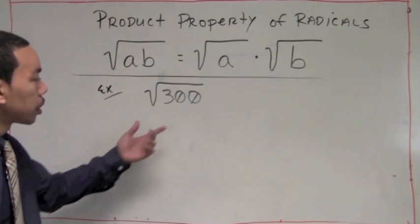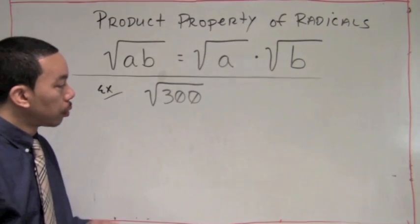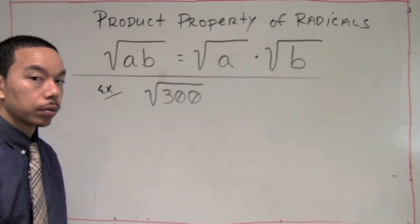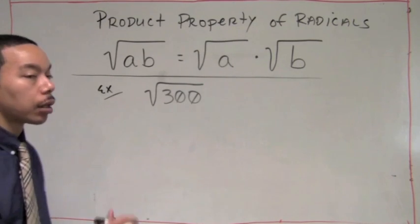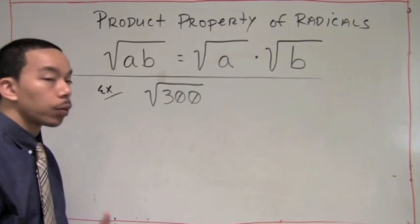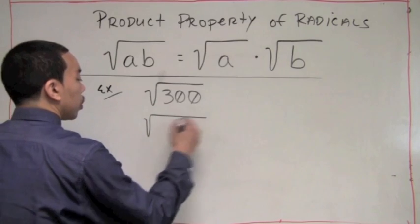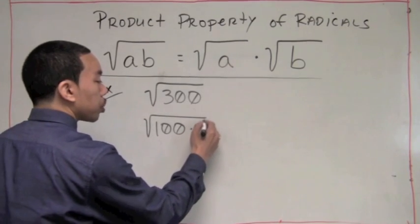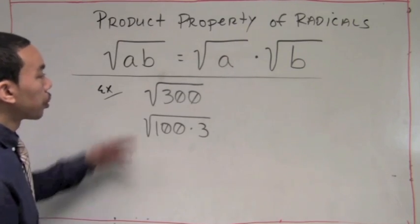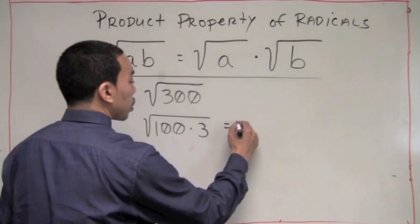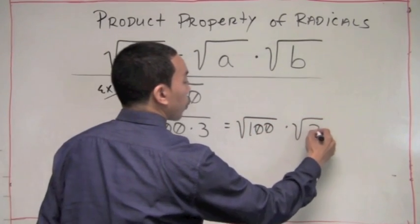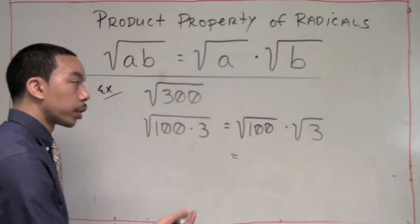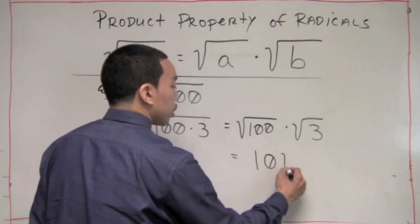Let's try another example: the square root of 300. That's definitely not a perfect square, so we ask what is the largest perfect square that can go into 300. From our list, the largest perfect square that goes evenly into 300 is 100, and it goes into 300 three times. So we write the square root of 100 times 3. Using the product property, we rewrite this as the square root of 100 times the square root of 3. The square root of 100 is 10, giving us 10 times the square root of 3.